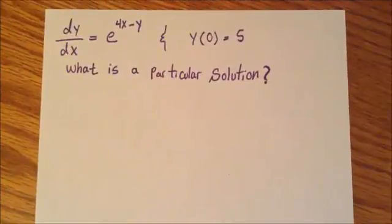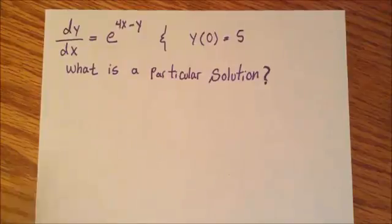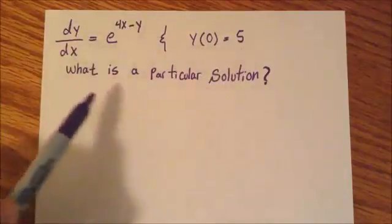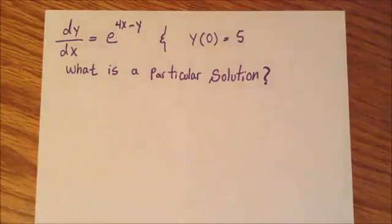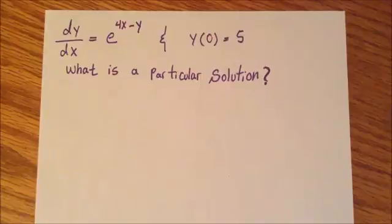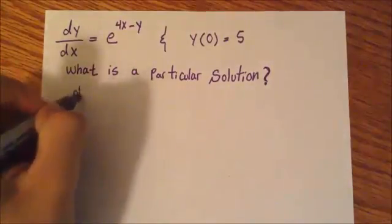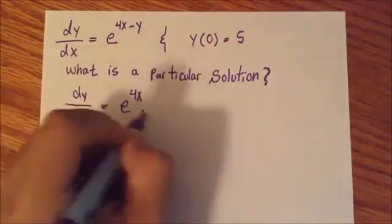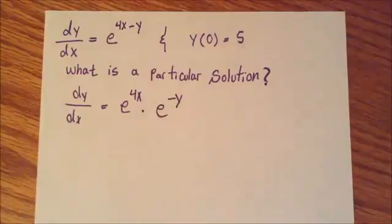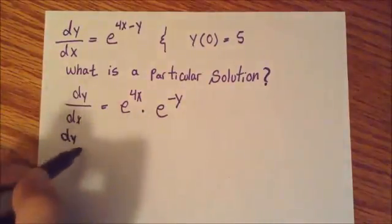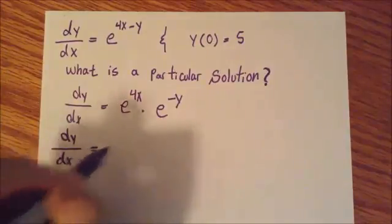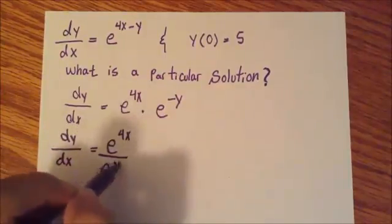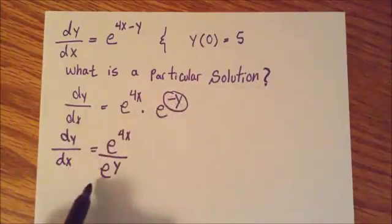Our second common mistake is related to separable differential equations. So we have if dy over dx equals e to the power of 4x minus y, and we have y of 0 equals 5, what is a particular solution? So one of the first things you have to do here is to break up your equation. So I'm going to break this up to dy over dx equals e to the power of 4x times e to the power of negative y. Now I'm going to break this up to dy over dx equals to e to the power of 4x all over e to the power of positive y. Because we have a negative y here. When we move back to the denominator, it becomes positive.